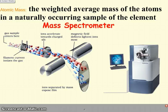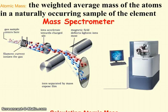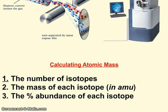But what the mass spectrometer does in order to calculate the atomic mass is we need three pieces of information. We need to know the number of isotopes that an element has, the mass of those isotopes in AMU, atomic mass units, and the percent abundance of each isotope.